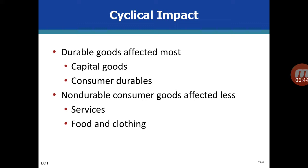What are the cyclical impacts? Durable goods are affected more than non-durable goods. Spending on non-durable goods cannot be postponed, while spending on durable goods is more expensive — for example, furniture, TV, and fridges. So spending on durable goods is more volatile than on non-durable goods. Non-durable goods include services, food, and clothing.